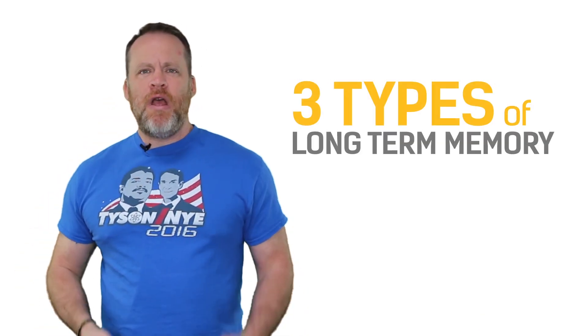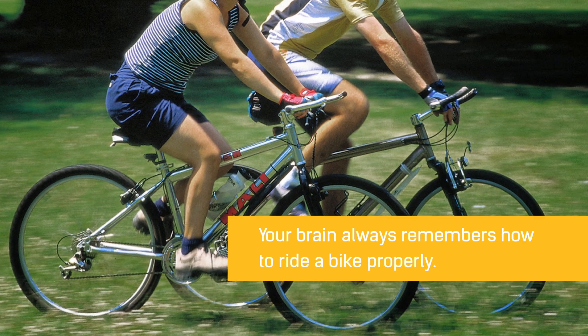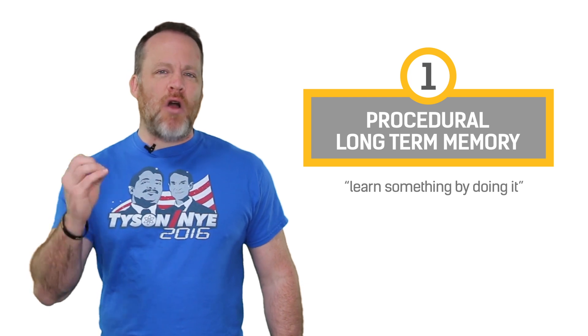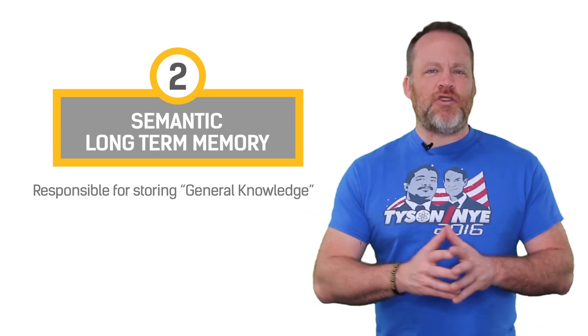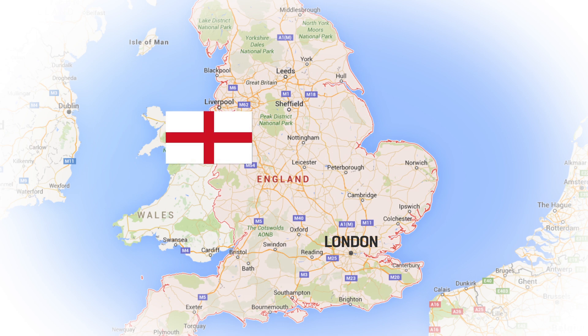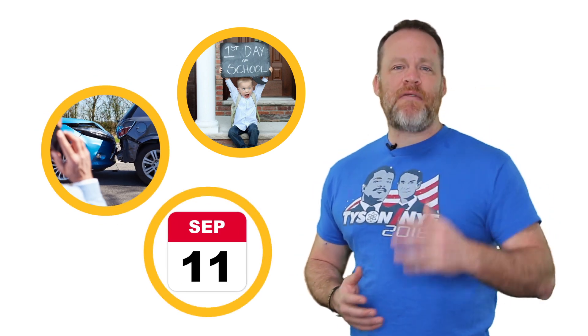There are really three types of long-term memory. The first is procedural memory, where you remember how to do something, such as riding a bicycle. Semantic long-term memory is responsible for storing information you know about the world — for example, remembering that London is the capital of England. Your episodic memory is responsible for remembering events in your life, such as your first day of school, a car accident, or where you were on September 11th.